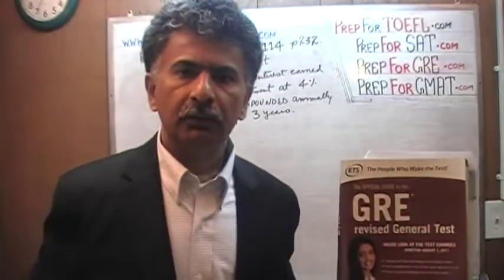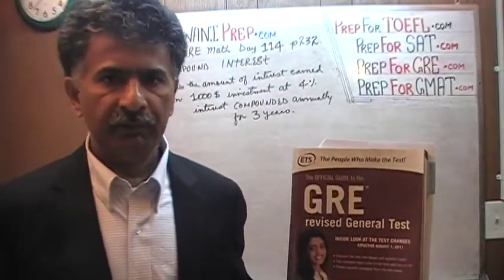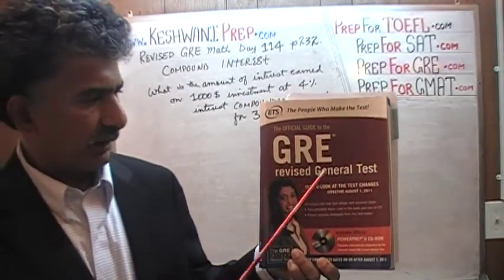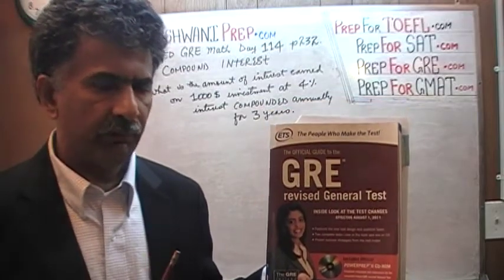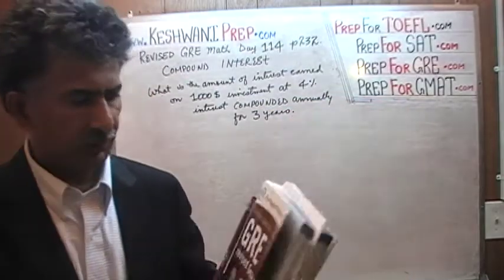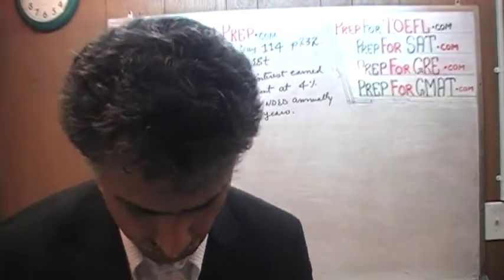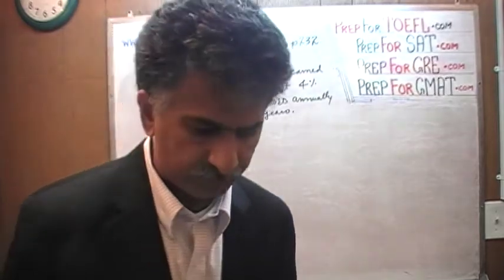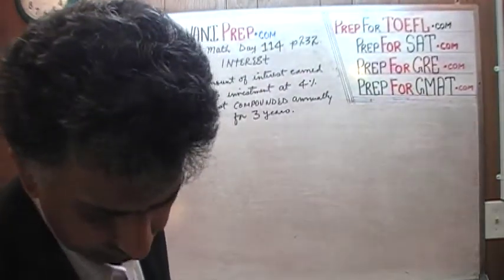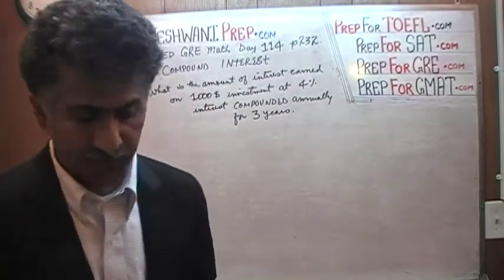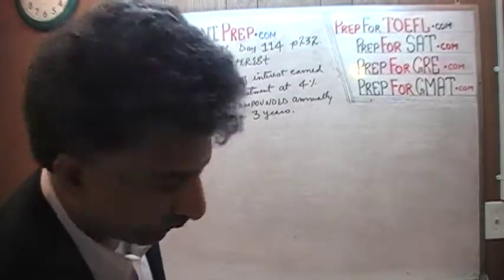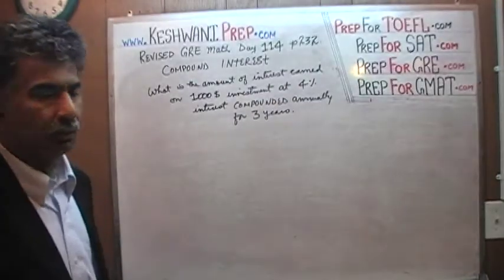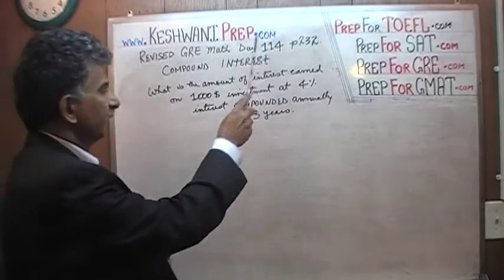We are here because we want to prepare for the GRE. We have been solving GRE math questions out of this book here, the official guide to the GRE, the revised general test. If you do not own this book already, purchase one immediately, you are going to need it. The problem we are about to solve deals with the concept of compound interest, which you will find discussed on page number 232. Today is our day number 114.